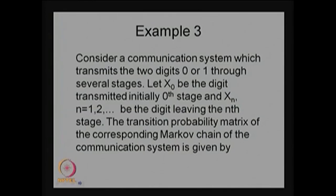This example is about a communication system in which transmission takes place with digits 0 and 1 over several stages. We define the random variable x_0 as the digit transmitted initially at the 0th step. Either the transmitted digit will be 0 or 1, so only two possibilities can occur at any nth step. Therefore, x_n over n forms a stochastic process because you never know which digit is transmitted in the nth stage.